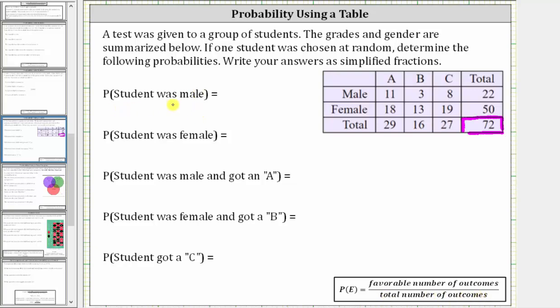The first probability is the student was male. Looking at the table, notice how there are a total of 22 males. 22 is the number of favorable outcomes out of a total of 72 outcomes. The probability the student was male is 22 divided by 72, or 22/72. But this does simplify because 22 and 72 share a common factor of two. To simplify, we divide both by two, which gives us 11/36.